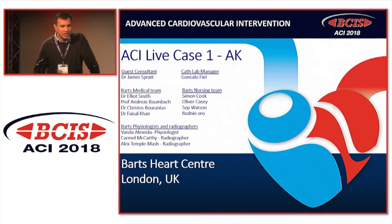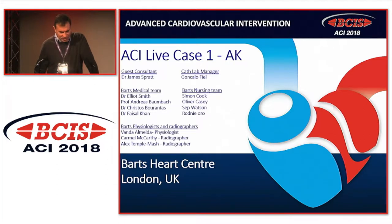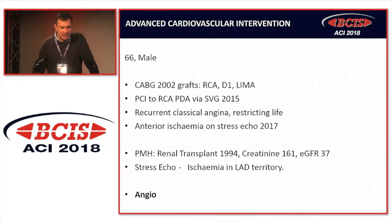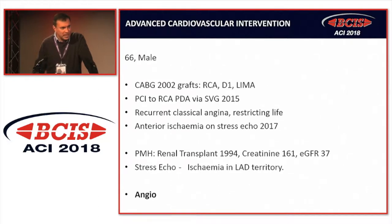I'm going to very briefly present the case and then we'll discuss potential strategies with the panel and audience. The case is going to be performed by Elliot Smith and James Spratt, with Andreas commentating from Barts. The case is a 66-year-old man. He's had previous grafts 16 years ago, and angioplasty to his right coronary via the vein graft in 2015. He's got CCS class 3 angina restricting his lifestyle with anterior ischemia on his stress echo. He's got a past history of renal transplant with an eGFR of 37.